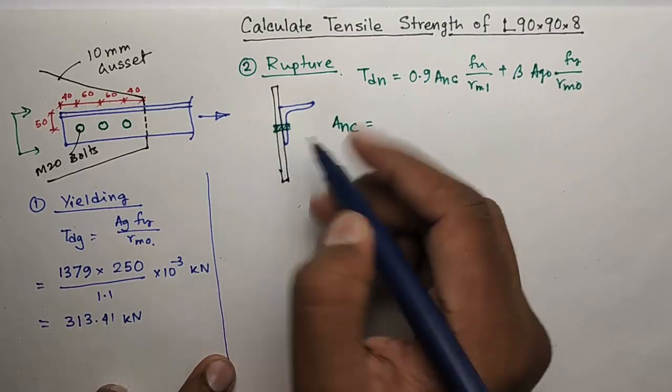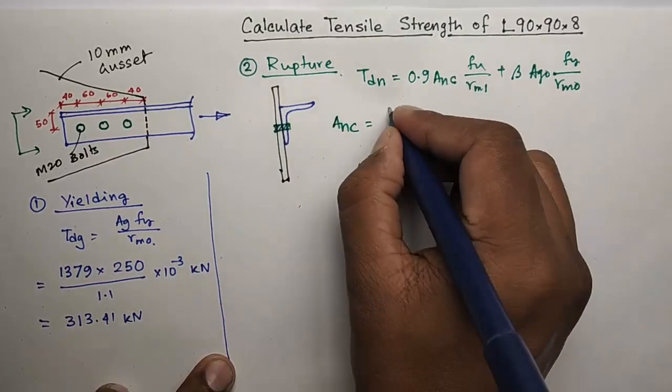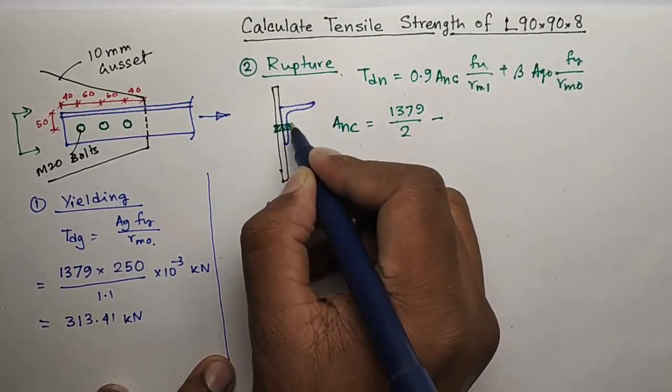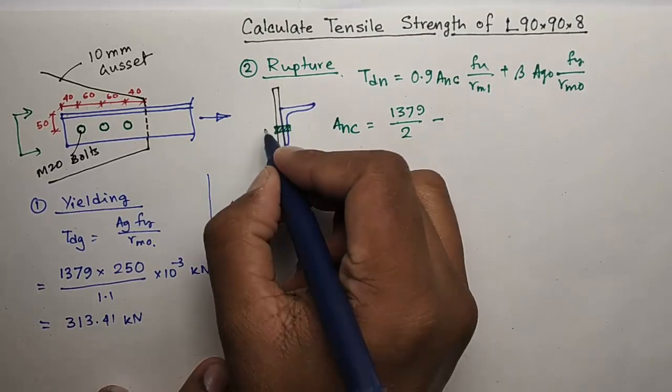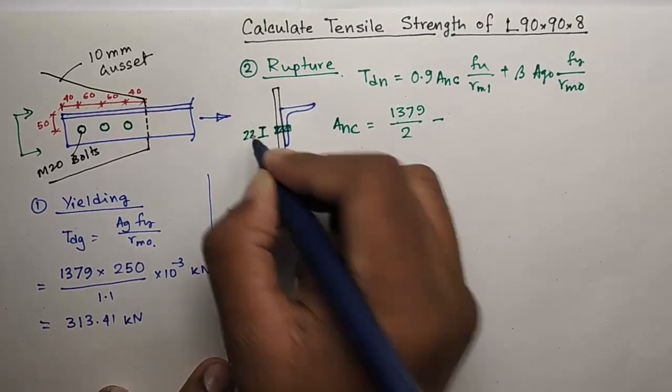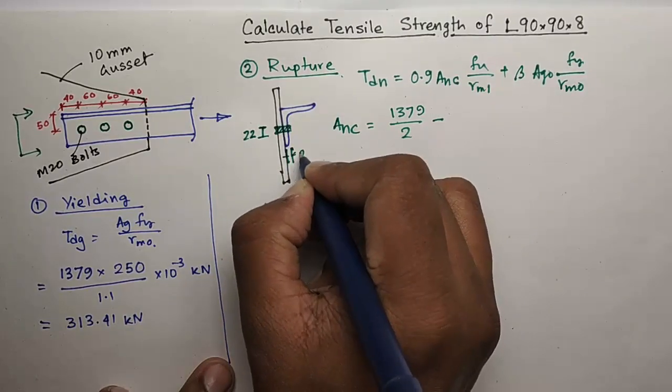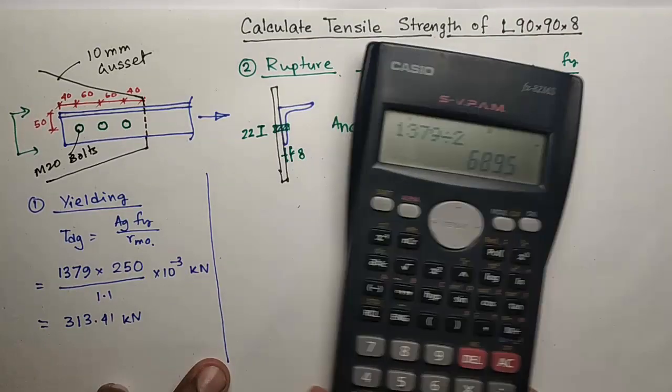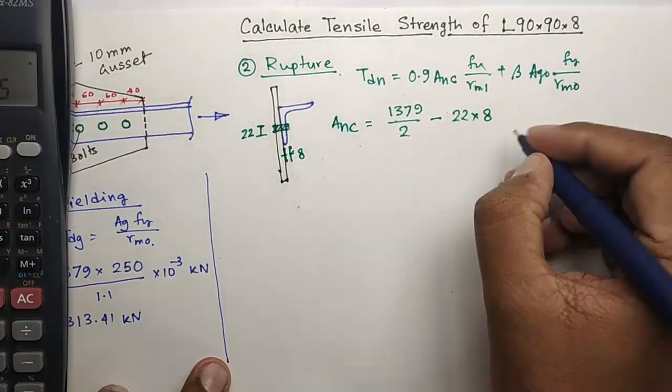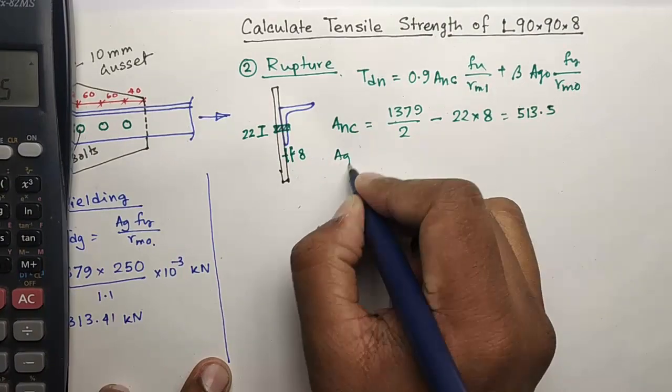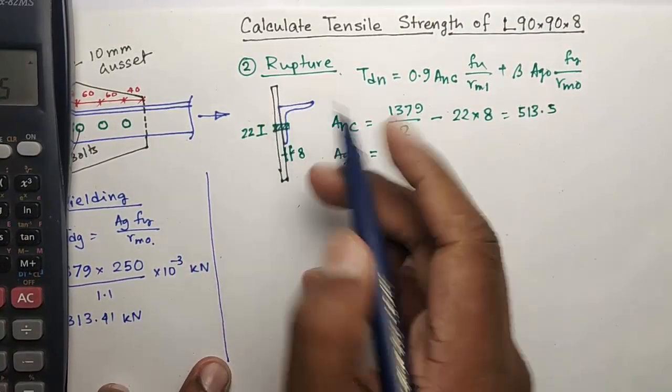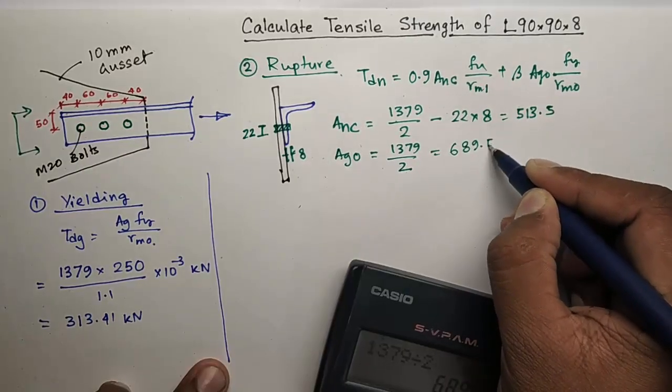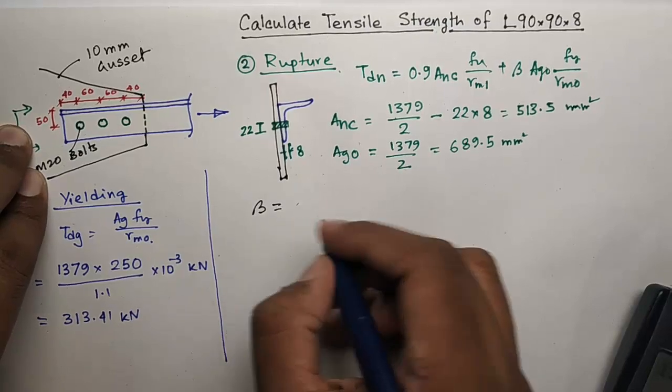So what is the net area? The total area is 1379, so this connected leg area is 1379 by 2. Then subtract this area. For M20 bolts, the diameter of holes is 22 and thickness is 8, so this area is 22 into 8, giving 513.5. AGO is the cross area of the outstanding leg, which is 689.5. Now we calculate beta.